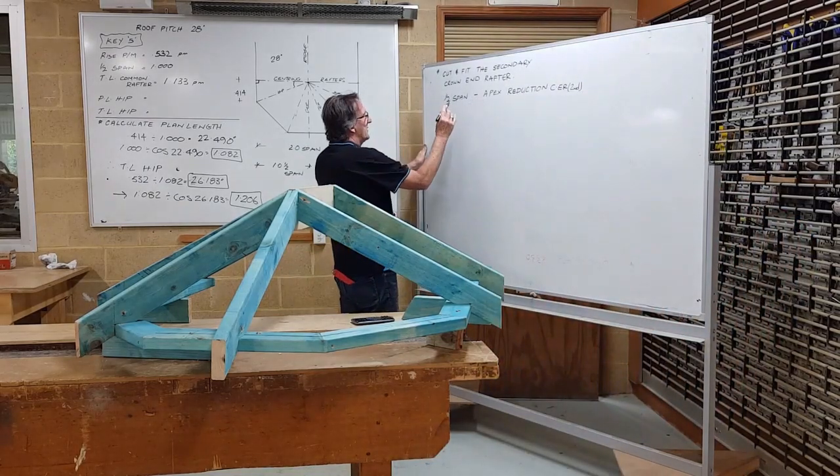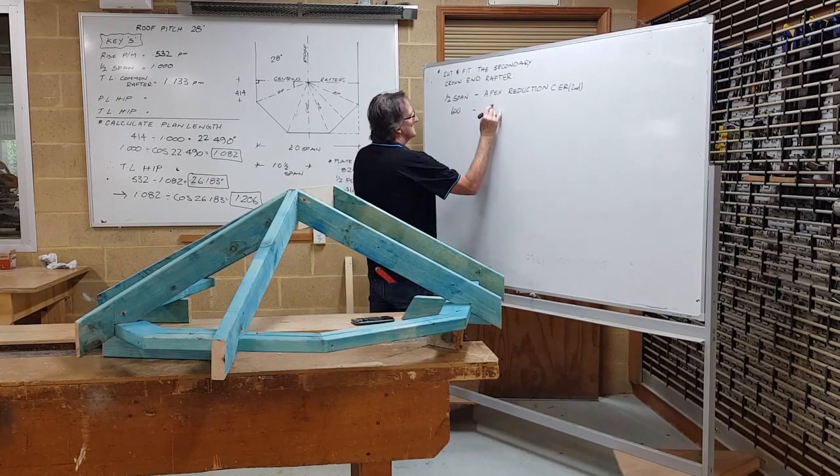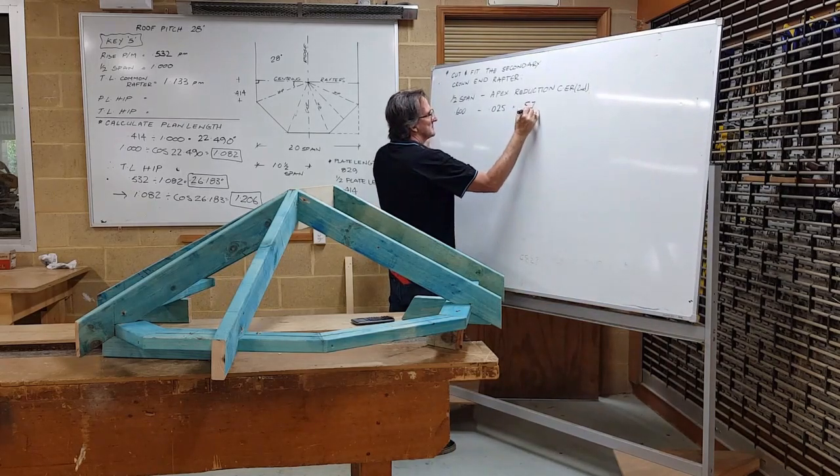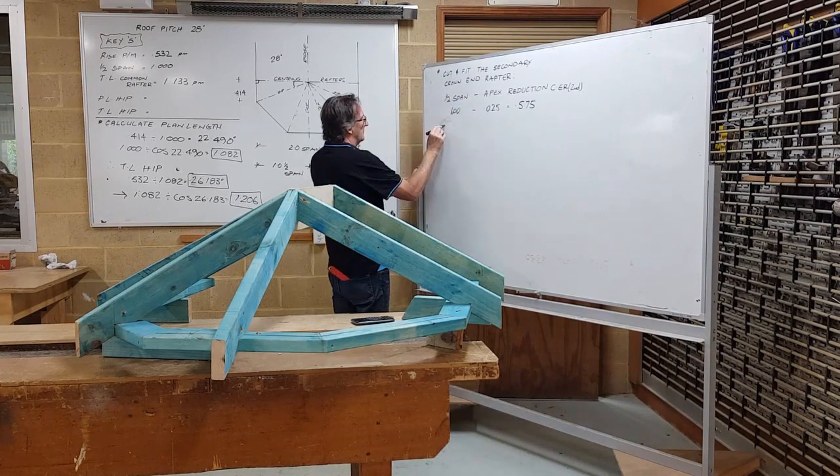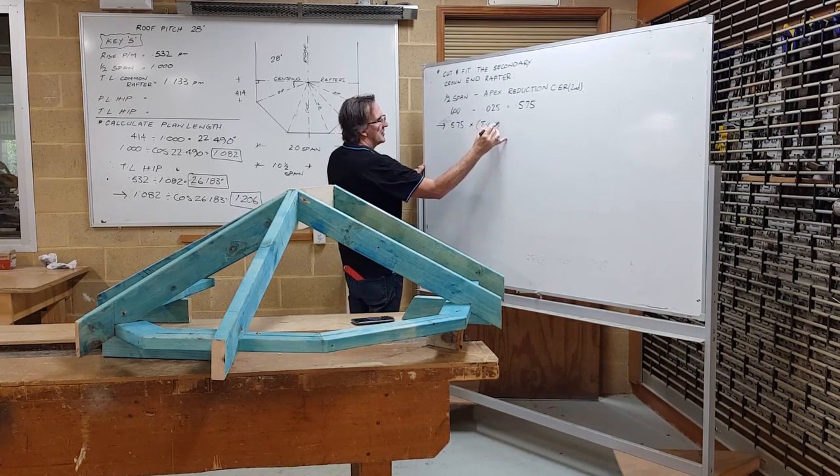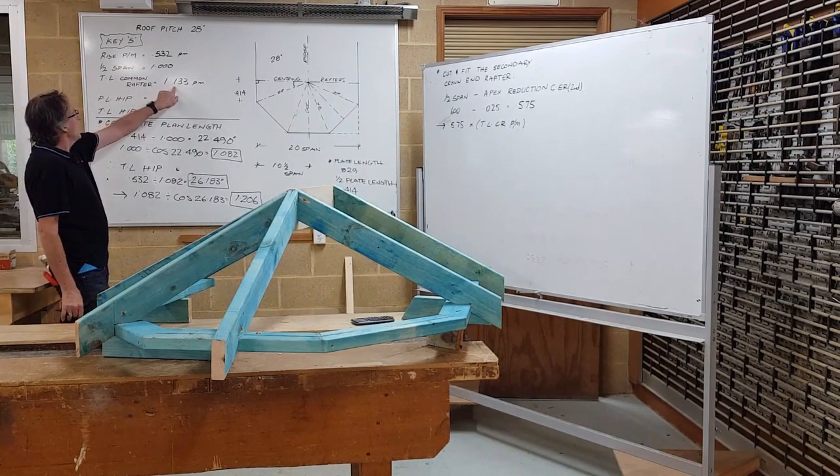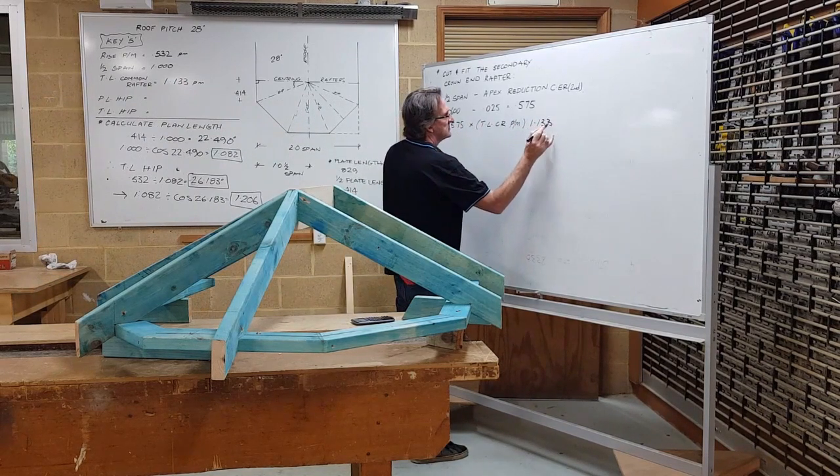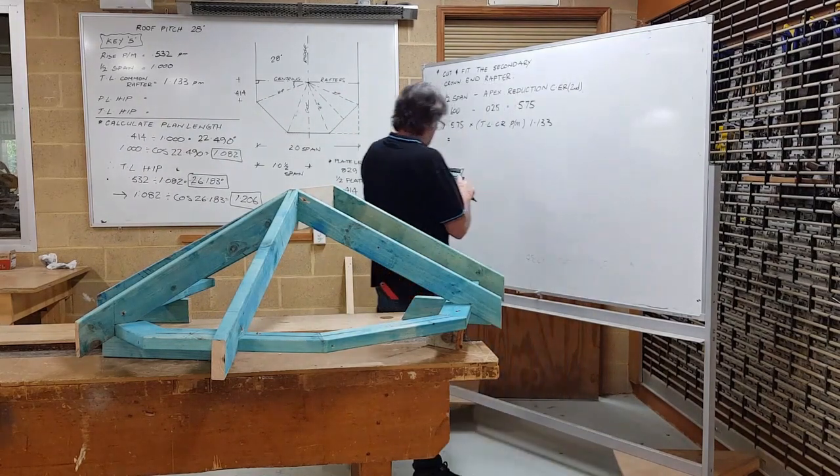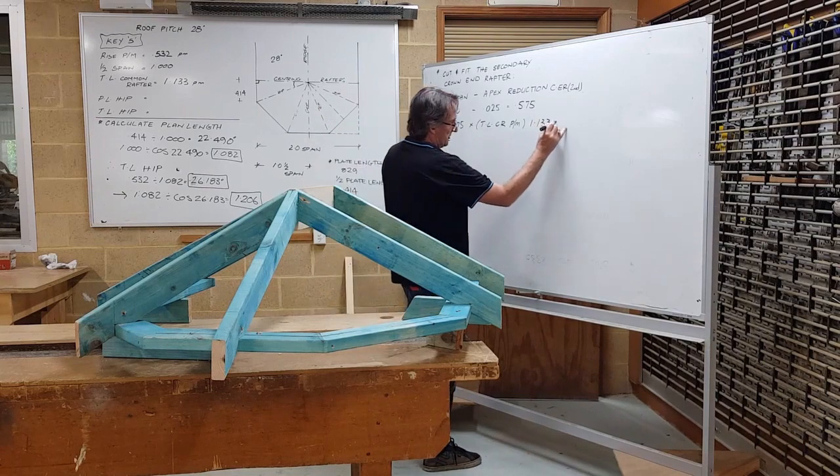So substituting those values into the formula, the half span for my job here is 600. I'm going to deduct from that a 25 millimeter apex reduction and that gives me 575. Therefore 575 multiplied by true length common rafter per meter 1.133 will give me the cutting length of the secondary crown end exactly. 0.575 multiplied by 1.133 equals 651.